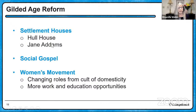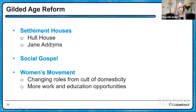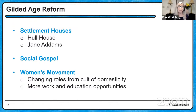Some reform movements began to address these problems. The Settlement House movement — Jane Addams and Hull House — provided a place for immigrant assimilation. The Social Gospel tried to bring back morality in business decisions. The Women's Movement was also growing: more women in the workplace, more higher educational opportunities, moving women away from the old cult of domesticity with its very limited domestic role.